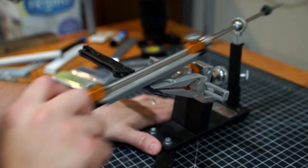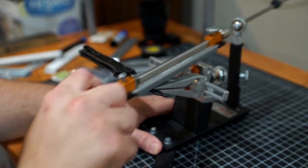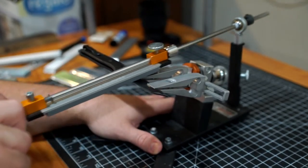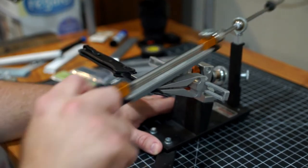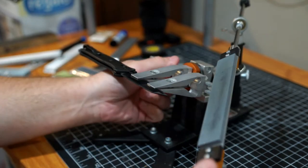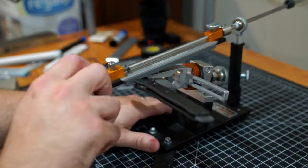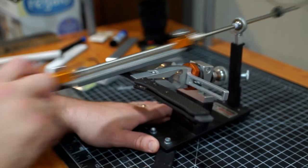The diamonds that I have, the Edge Pro diamonds with the fine and the super fine, they're not really really deep. They're not like Atoma deep or DMT deep, especially because the plates that I have are pretty worn out. I'd say they probably have like 50 or 40 percent of their original grit left.